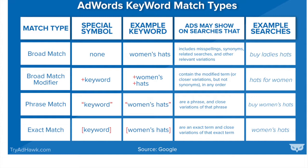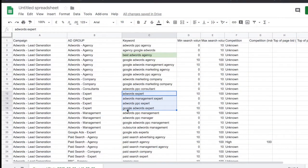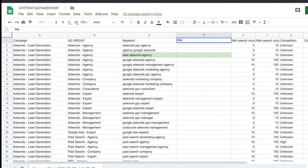To round up: broad match has no symbol; broad match modifier uses a plus sign before each word; phrase match uses quotation marks either side of the keyword; exact match uses square brackets either side. For example, 'women's hats' on broad match will show for 'buy ladies hats'; on broad match modifier it will show for 'hats for women'; on phrase match it will show for 'buy women's hats'; and on exact match it will only show when someone searches 'women's hats.' For the purpose of this video we're going to use exact match keywords to make sure we pull in highly relevant traffic. In time we can open up our best keywords to phrase match and broad match modifier to pull in more traffic, but for now we want tightly controlled searches. To set exact match in the spreadsheet, insert a column to the right of keywords called 'Match Type' and enter the match type.